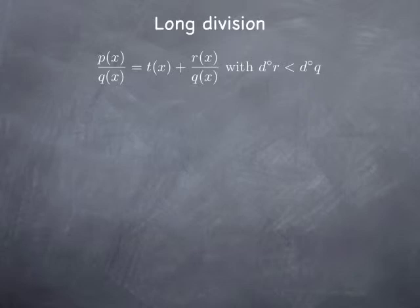Let p and q be two polynomials. The function we're looking at is a quotient of two polynomials, p and q. If we do the long division of p by q, we get something of the form t(x) plus r(x) over q(x), where t and r are also polynomials, and the degree of the remainder r is strictly less than the degree of the divisor q. The polynomial t(x), the quotient, has degree equal to the degree of p minus the degree of q.